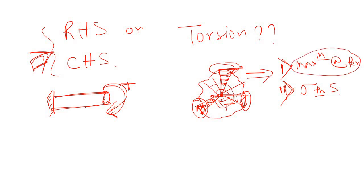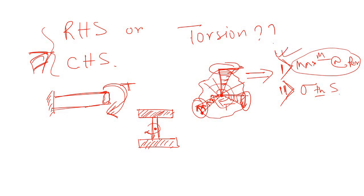Given that maximum stress occurs at the periphery, you need to put maximum material at the outer edge. Consider a wide flange or I-section — the maximum material is provided at the farthest point from the center. So the first condition is fulfilled: maximum material is placed at the periphery where maximum stress occurs.